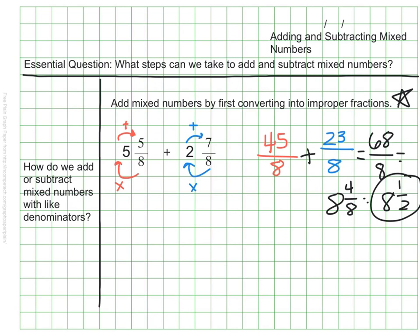Let's do the same with subtraction. Again, we'll have like denominators, because that will be a little bit easier to work with as we're just getting used to this strategy. This time we have the mixed number 6 and 4 sevenths, and we want to subtract 3 and 6 sevenths. I wish I could just subtract the fractions, but I can't take away 6 sevenths from 4 sevenths. So I'm going to go back to my strategy. I'll turn these first into improper fractions.